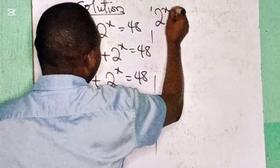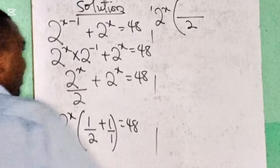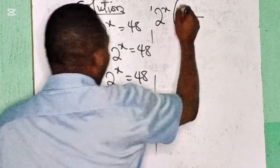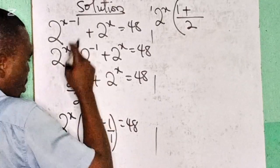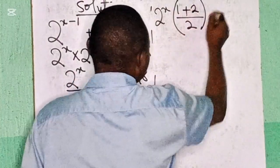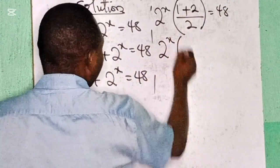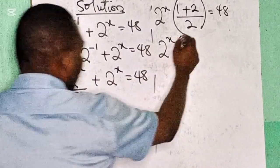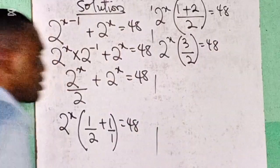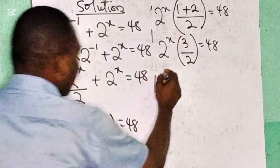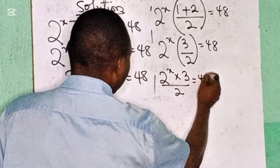I'm having 2 raised to the power of x, bracket open. The LCM of 2 and 1 is 2. If I divide 2 by 2, I get 1; 1 times 1 is 1. If I divide 2 by 1, that is 2; 2 times 1 is 2. Equals 48. So I'm having 2 raised to the power of x, bracket open, 1 plus 2 gives us 3, so 3 over 2 equals 48.